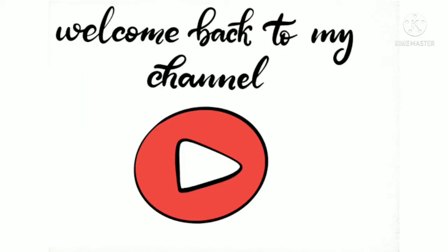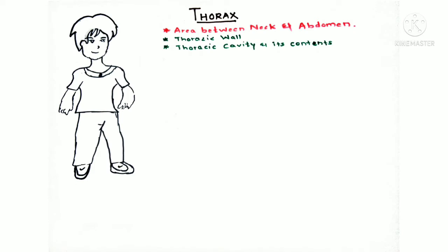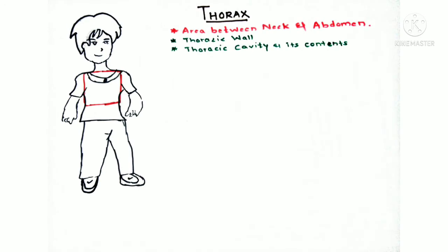Hey guys, welcome back to my channel. In this video we are going to discuss the thoracic region of the body. On the left of your screen you can see a handsome guy — his name is Henry and he's here to help us with the video. Coming back to our topic: what is thorax? Thorax is the area between the neck and the abdomen. The red border which you can see on Henry's body indicates the thoracic region.